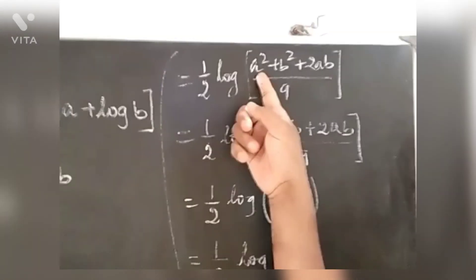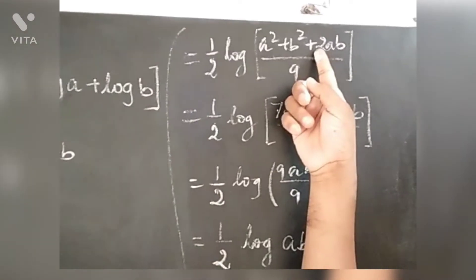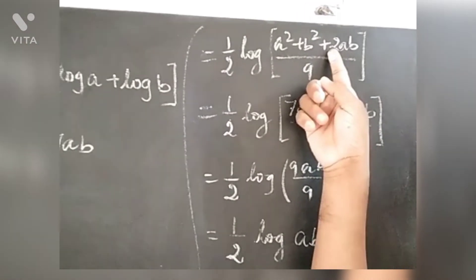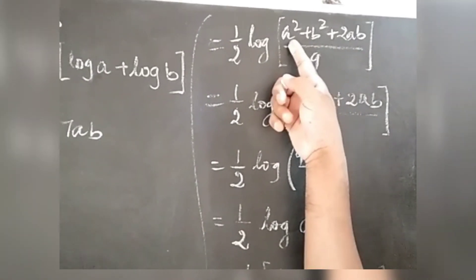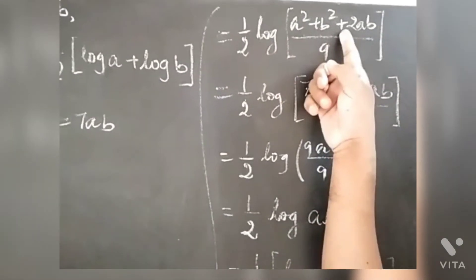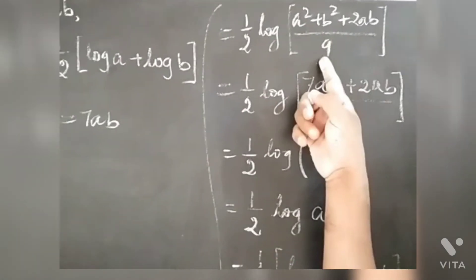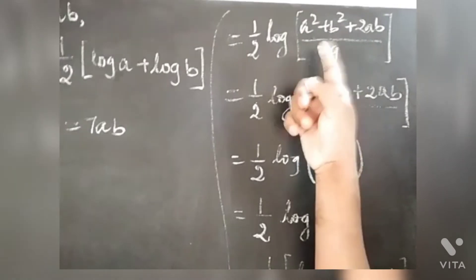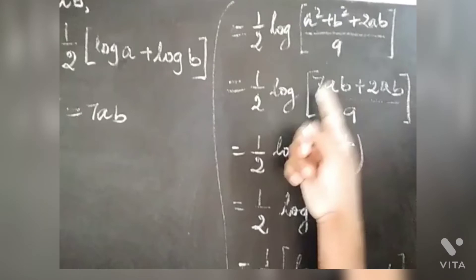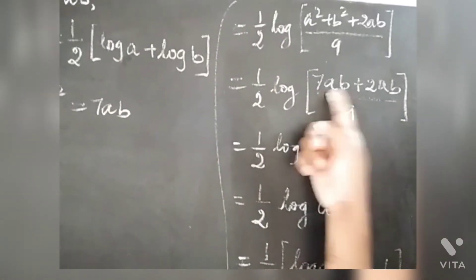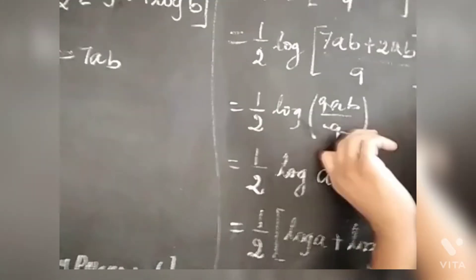The square is in the numerator and denominator. If we apply the (a + b) whole square formula: a squared plus b squared plus 2ab. Using the given condition, a squared plus b squared equals 7ab. So 7ab plus 2ab equals 9ab, and the 9s cancel out.